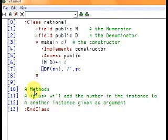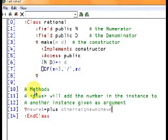So plus will take an argument which is an instance of rational, another number, and it will add it to the number we have now. So here's the function. It returns a new rational. The name of the function is plus. And it takes as an argument another rational. And it's got a couple of local variables. Of course, it has to be public.